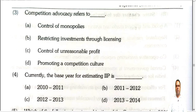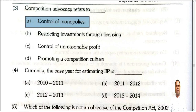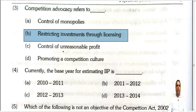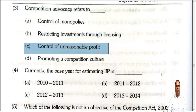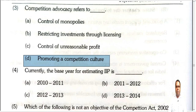Third question: Competition advocacy refers to what? Option 1 is control of monopolies — that is wrong. Restricting investments through licensing is also wrong. Control of unreasonable profits is also not the right answer. The correct answer is option B: promoting a culture of competition — educating and promoting competition, which indirectly also controls monopolies.